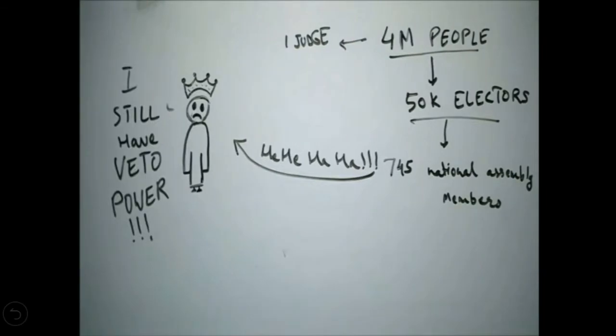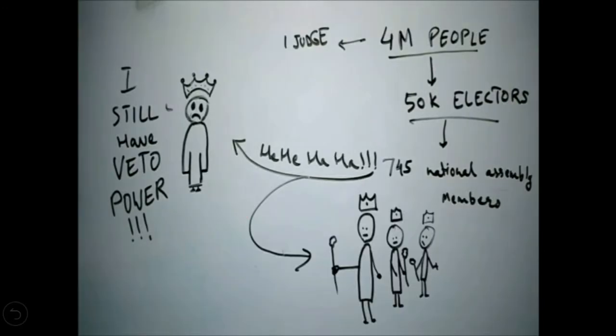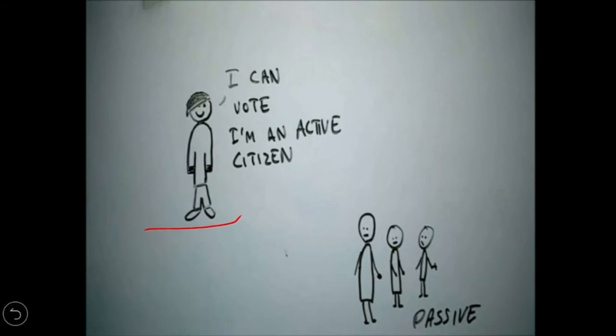The national assembly also controlled the ministers, but King Louis XVI still retained one main power — that is the veto power. This power means he still had the right to take important decisions for which only he was answerable. Citizens who had the power of voting were known as active citizens, while those without voting rights were known as passive citizens.